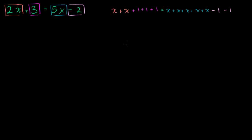Now we want to isolate the x's on the same side of the equation. There are two ways of doing it: we could subtract 2x from both sides — that would leave a positive number of x's on the right-hand side — or we could subtract 5x from both sides. That's what's neat about algebra: as long as you do legitimate operations, you will eventually get the right answer. So let's start off subtracting 2x from both sides, meaning we remove 2x's from the left-hand side and also from the right-hand side.